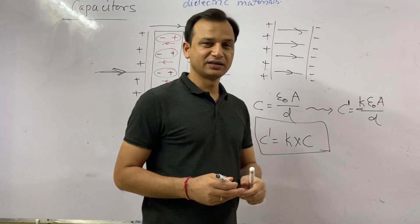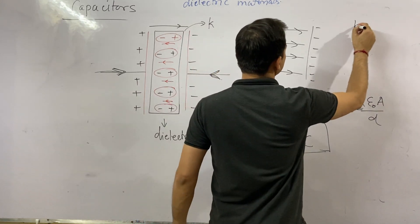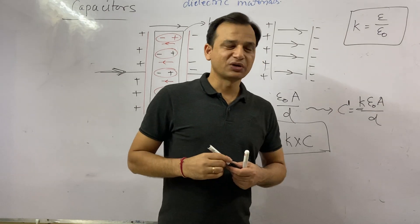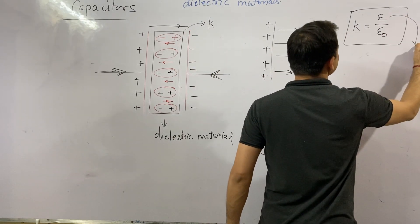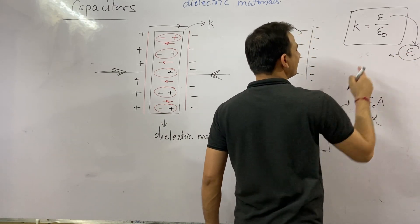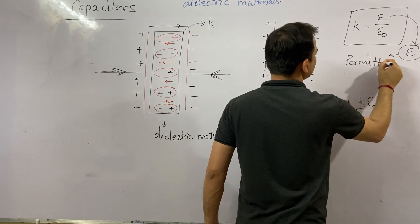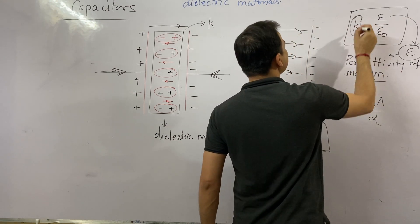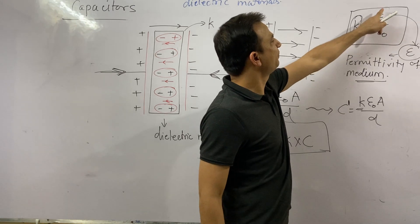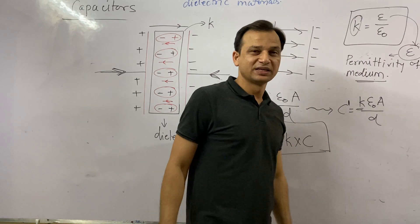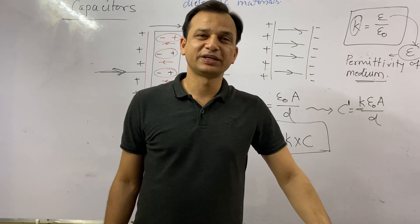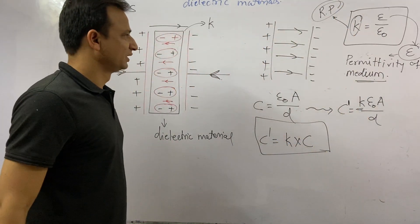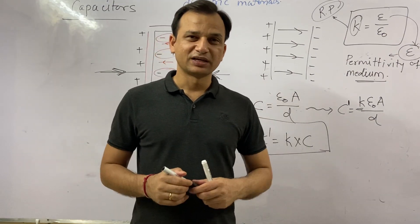The dielectric constant k is written as k is equal to epsilon by epsilon naught. It is a unitless quantity because it is a ratio. Here epsilon is the permittivity of the medium. Since k is the ratio of the permittivity of the medium to the permittivity of free space, it is also called the relative permittivity of the medium. That covers the topic of capacitors — keep revising and keep preparing for your exam. Thank you.